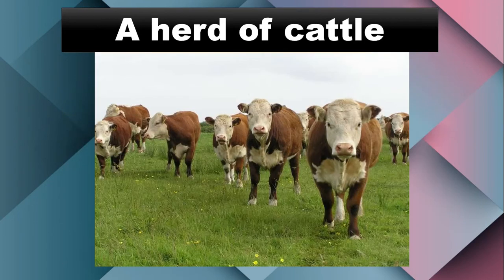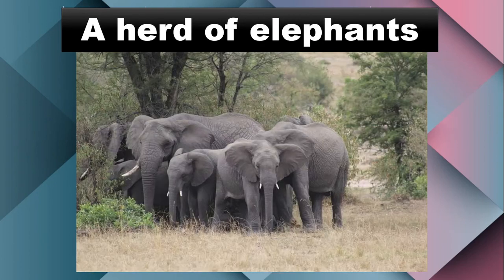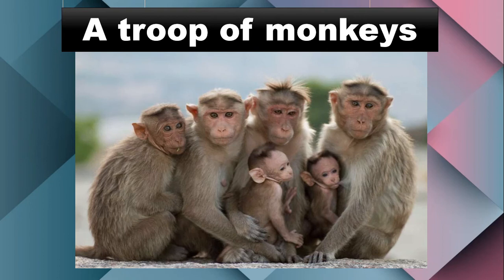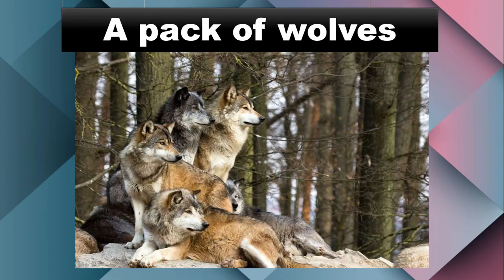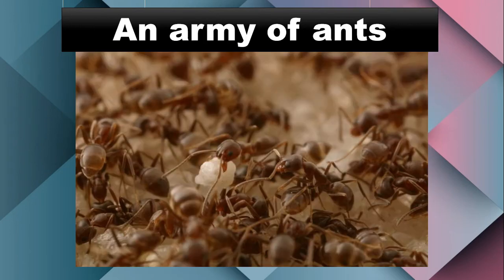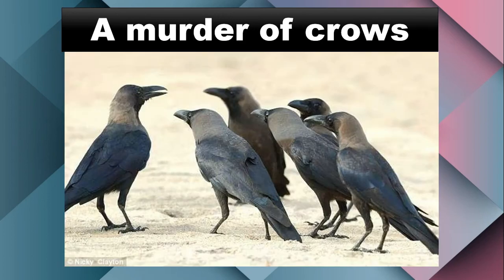A brood of chickens. A herd of cattle. A herd of elephants. A flock of sheep. A litter of puppies. A troop of monkeys. A pack of wolves. An army of ants. A murder of crows. Ants are referred to as army because they have queens and soldiers. That's why we say an army of ants. We call them murder of crows because of the superstitious belief that when someone sees a crow, someone in the family will die — so a group of crows is called a murder of crows.